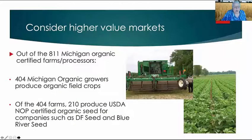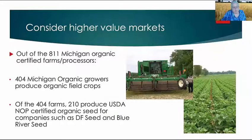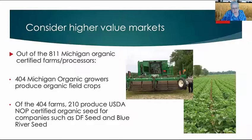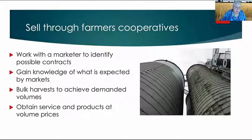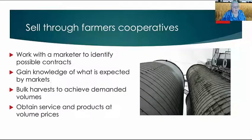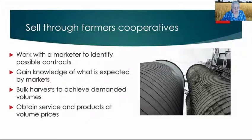Consider higher-value markets and engage in a co-op or marketing system. There are 811 Michigan certified organic farms, and 404 of them grow certified organic field crops — grains, beans, pasture, and hay. Of those 404 farms, 210 produce USDA NOP certified organic seed for commercial companies like DF Seed and Blue River Seed. Working with farmers' co-ops makes a big difference in market opportunity and education — helping you deliver a better, cleaner product and bulk your harvest for access to different contracts.